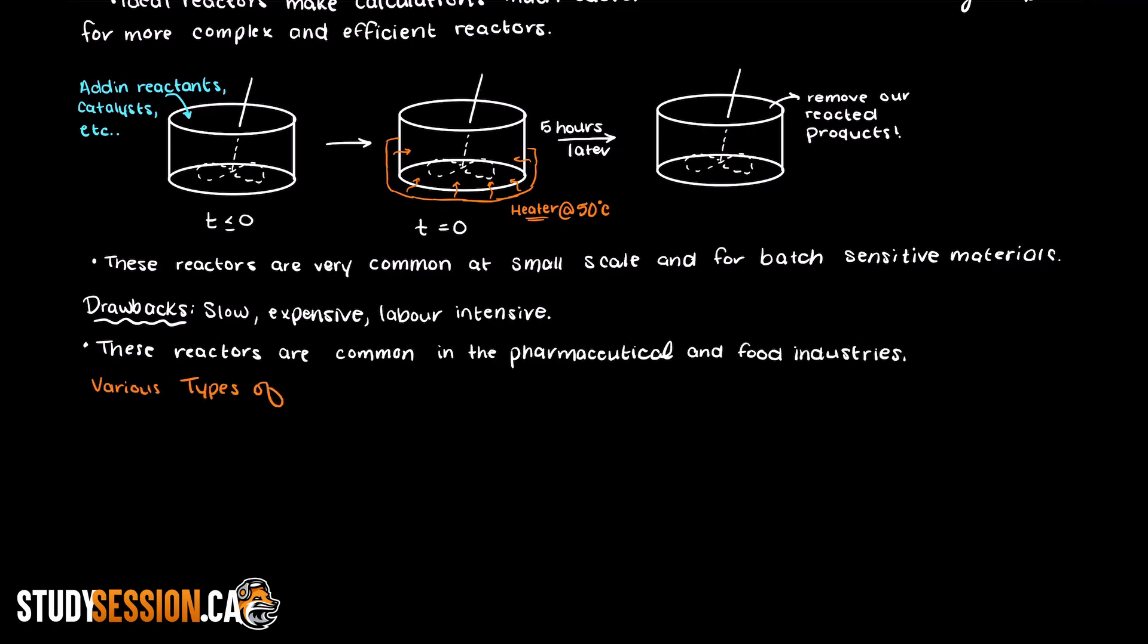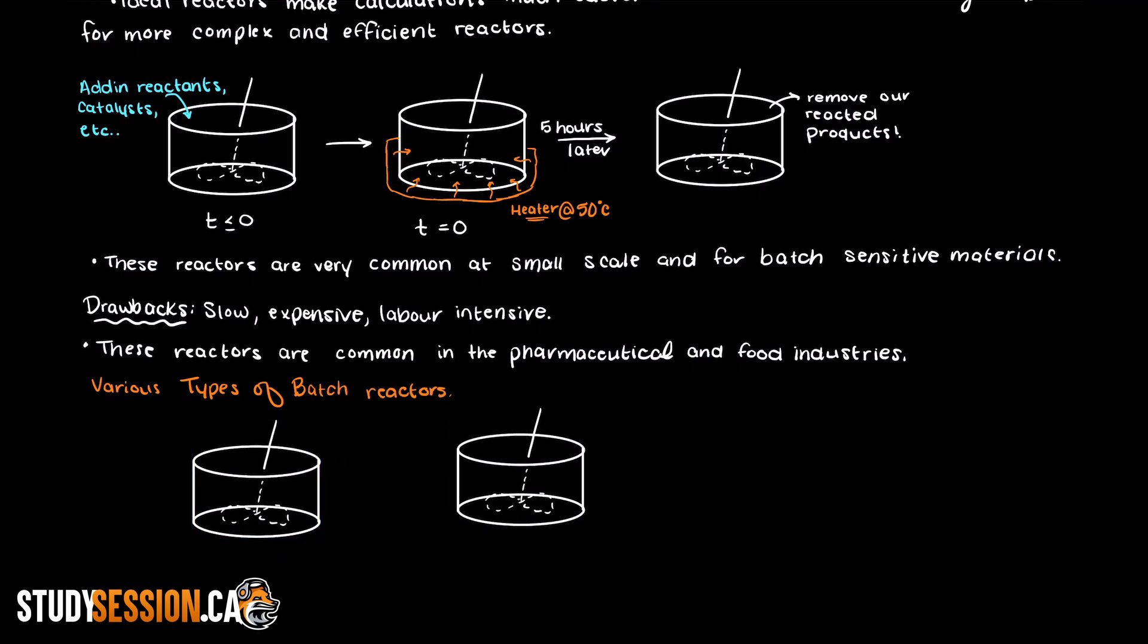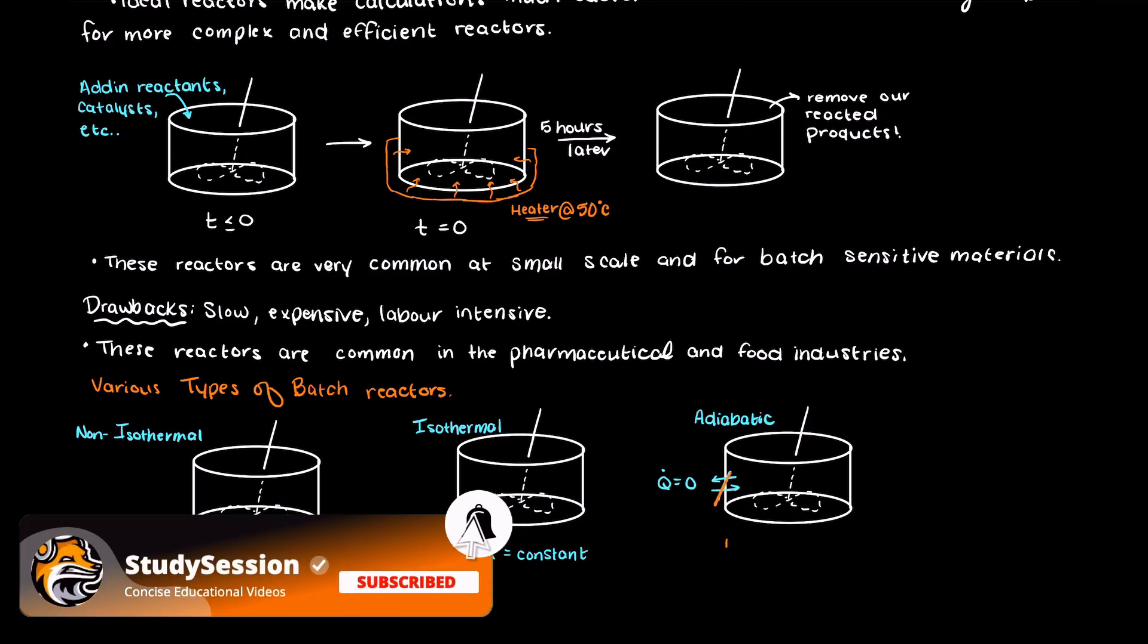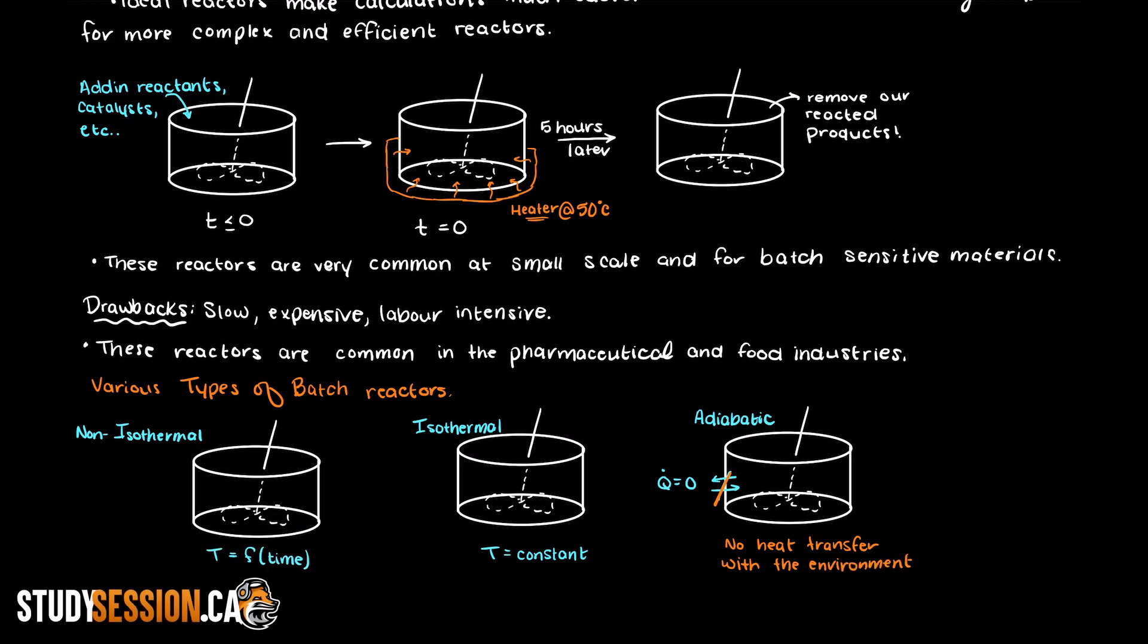The heat transfer in batch reactors depends on the reaction occurring within the vessel. You could have a temperature changing system, so non-isothermal, a constant temperature system, isothermal, or an isolated adiabatic batch reactor in which there is no heat transfer with the environment. The reason this depends on the reaction occurring within the reactor is because we do not want an adiabatic system for a highly exothermic reaction since we are likely going to need a cooling agent to keep the temperature of our system down.